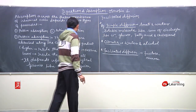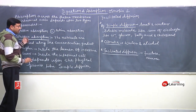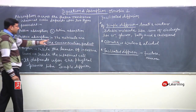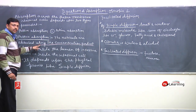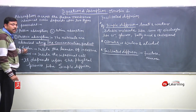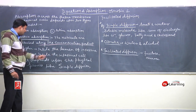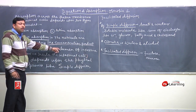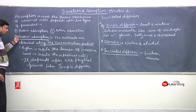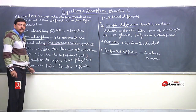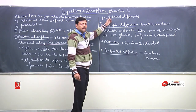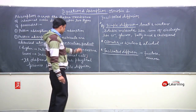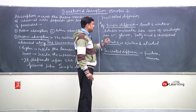In passive absorption, the nutrients are absorbed along the concentration gradient — that is, from a higher concentration present inside the lumen of the intestine to a lower concentration inside the intestinal cell. The substance moves from the lumen of the intestine into the intestinal cell. Passive absorption depends upon physical processes like simple diffusion, osmosis, and facilitated diffusion.